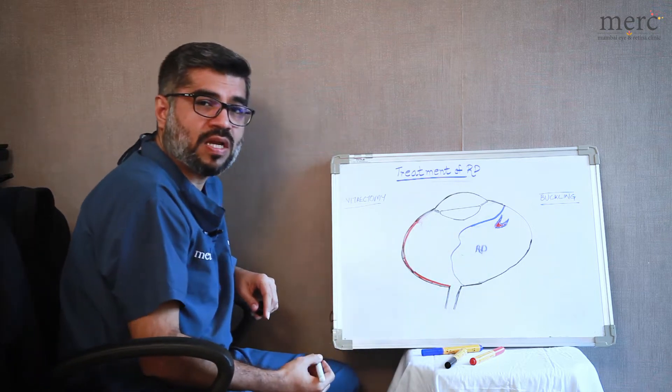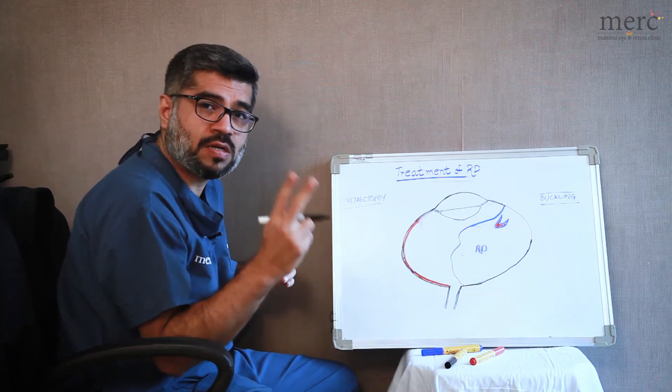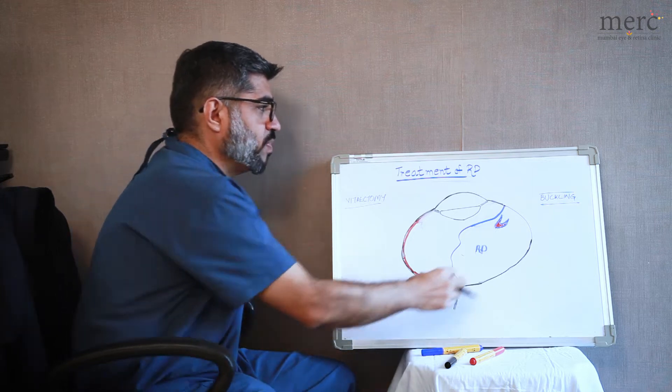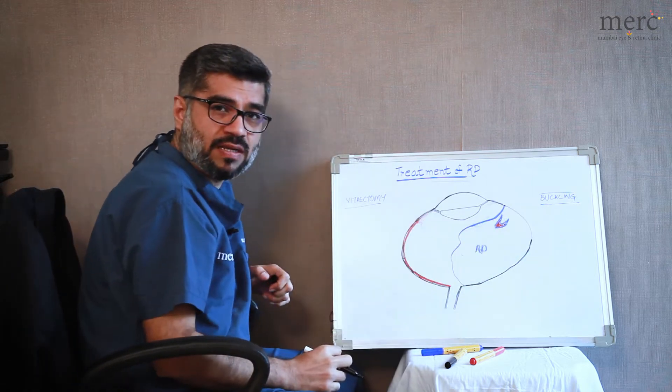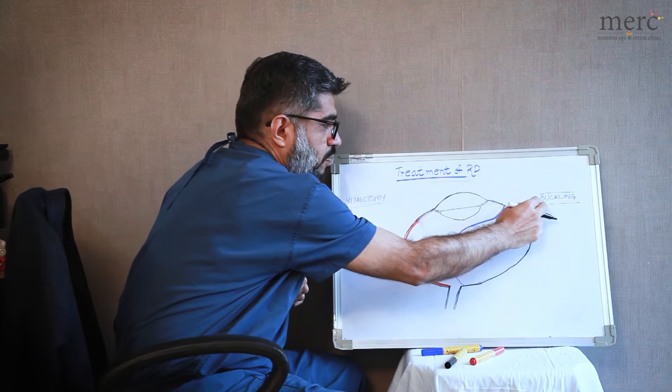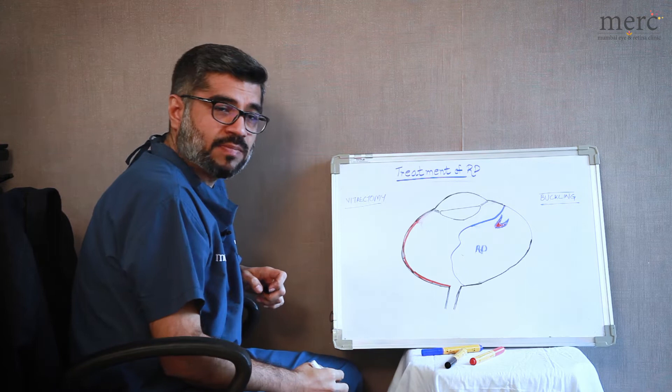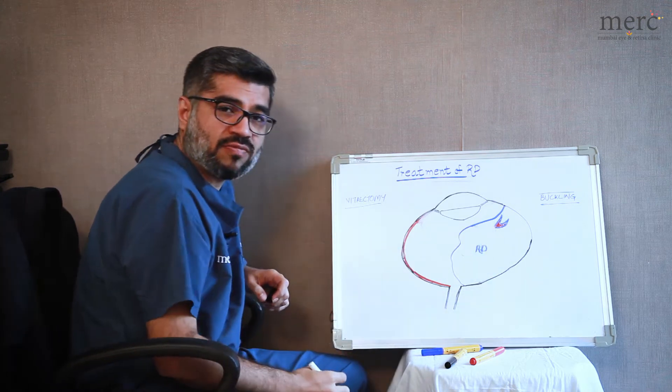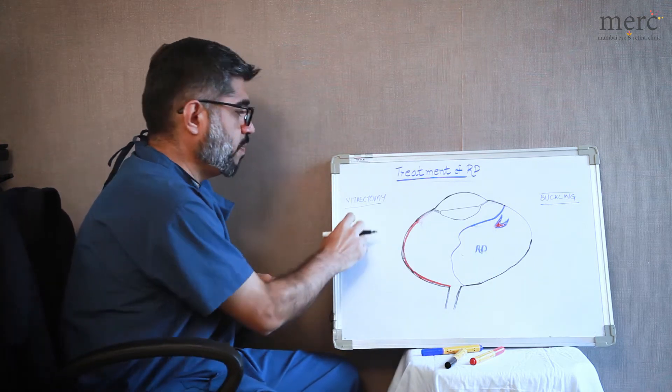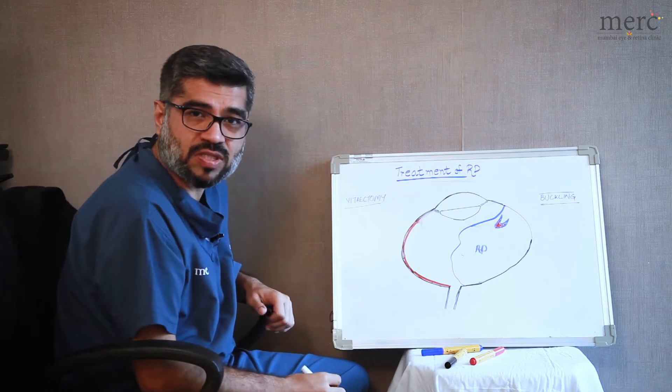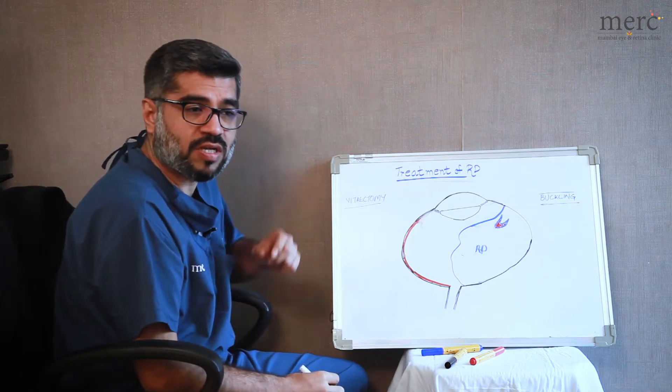This retinal detachment can principally be fixed in two ways. One is a surgery from the outside wherein a plastic piece or silicon material is pressed over the eye to support this retinal tear which is called a scleral buckling surgery, and a surgery from the inside which is called a vitrectomy or vitreous surgery.